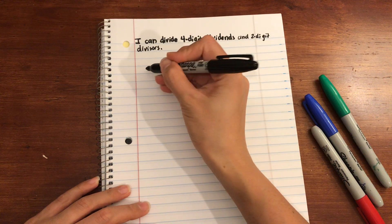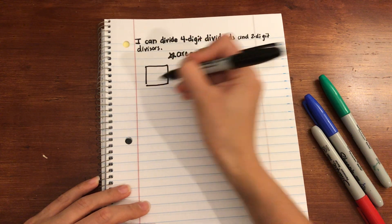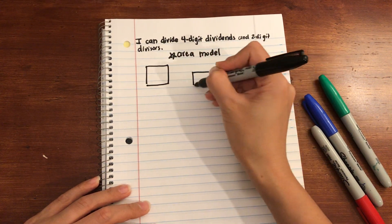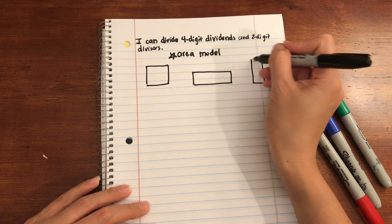For example, let's go ahead and look at some area models. I'm going to make some up. All shapes and sizes.